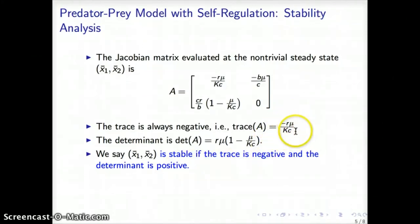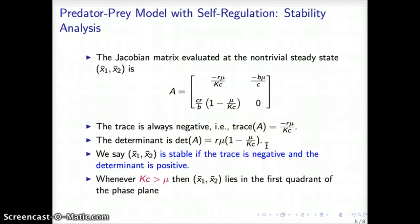Conditions of stability will be in place when we look for conditions to have a negative trace and a positive determinant. In this case, the trace is negative, so easily we can derive a condition for this determinant to be positive. Specifically, we observe that if K times c is greater than μ, then the determinant is positive and the trace is negative, which gives a condition of stability for the non-trivial steady state.